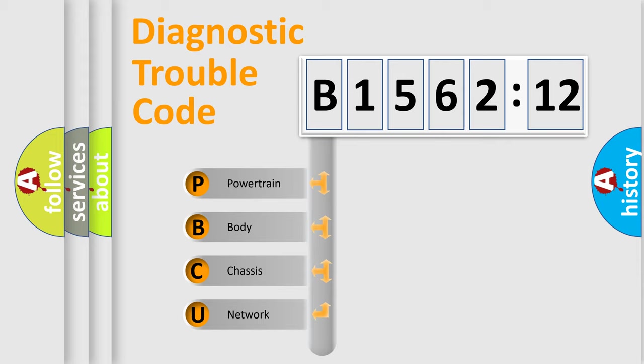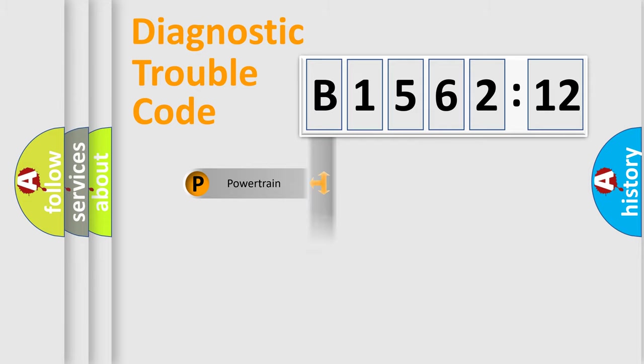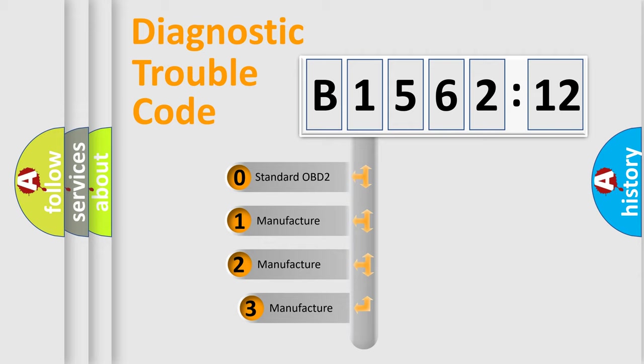We divide the electric system of automobile into the four basic units: Powertrain, body, chassis, network. This distribution is defined in the first character code.